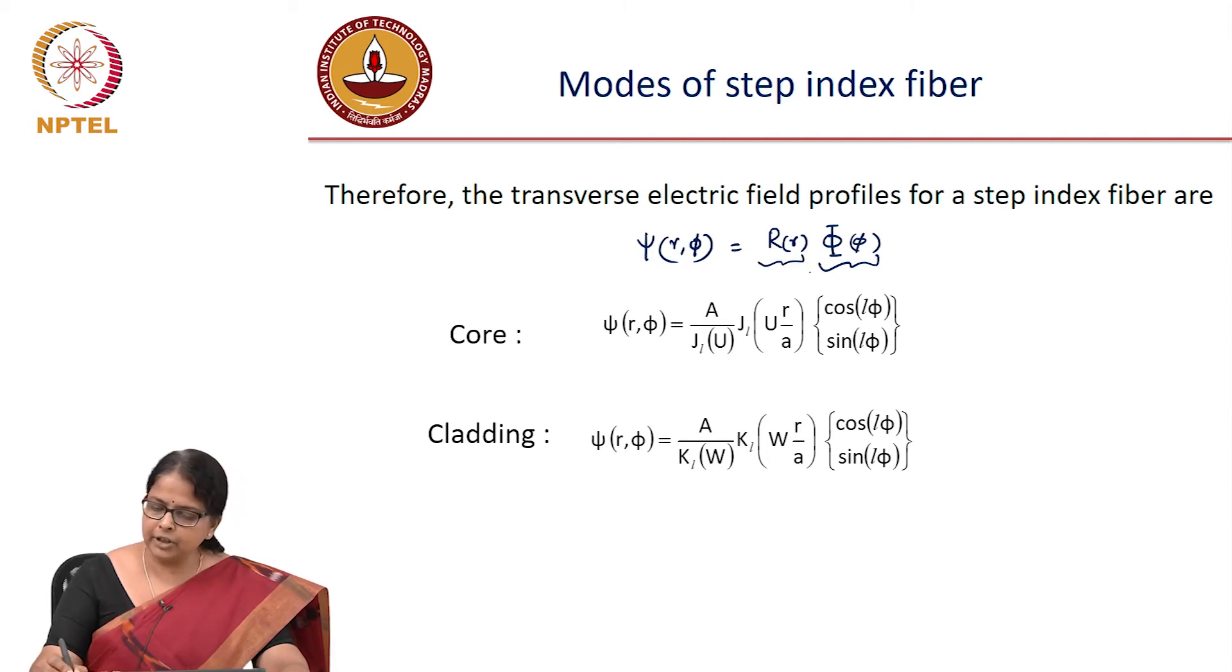Now r a function of r, this is the solution in the core and that we are saying is J function in the core and K function in the cladding. So J_L(ur/A) and K_L(wr/A). Why w? Because in the cladding the corresponding parameter is w.